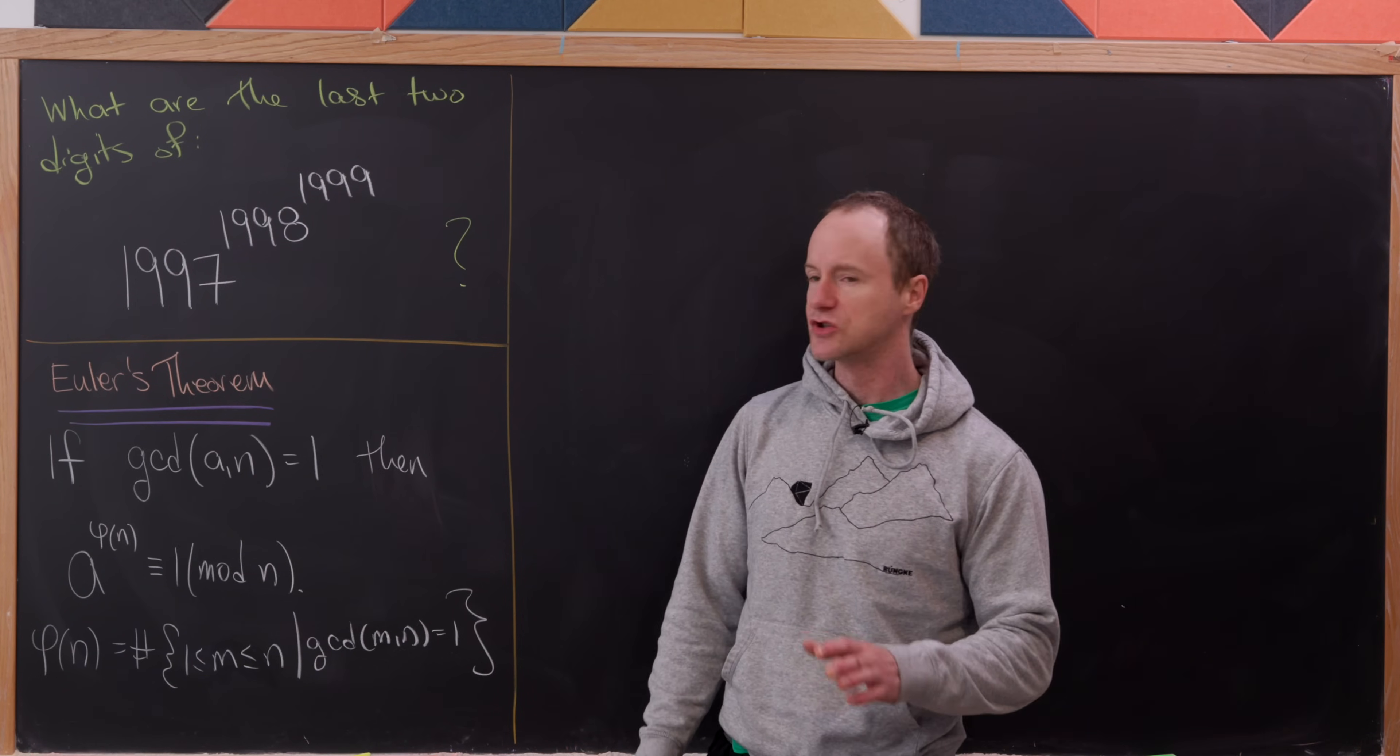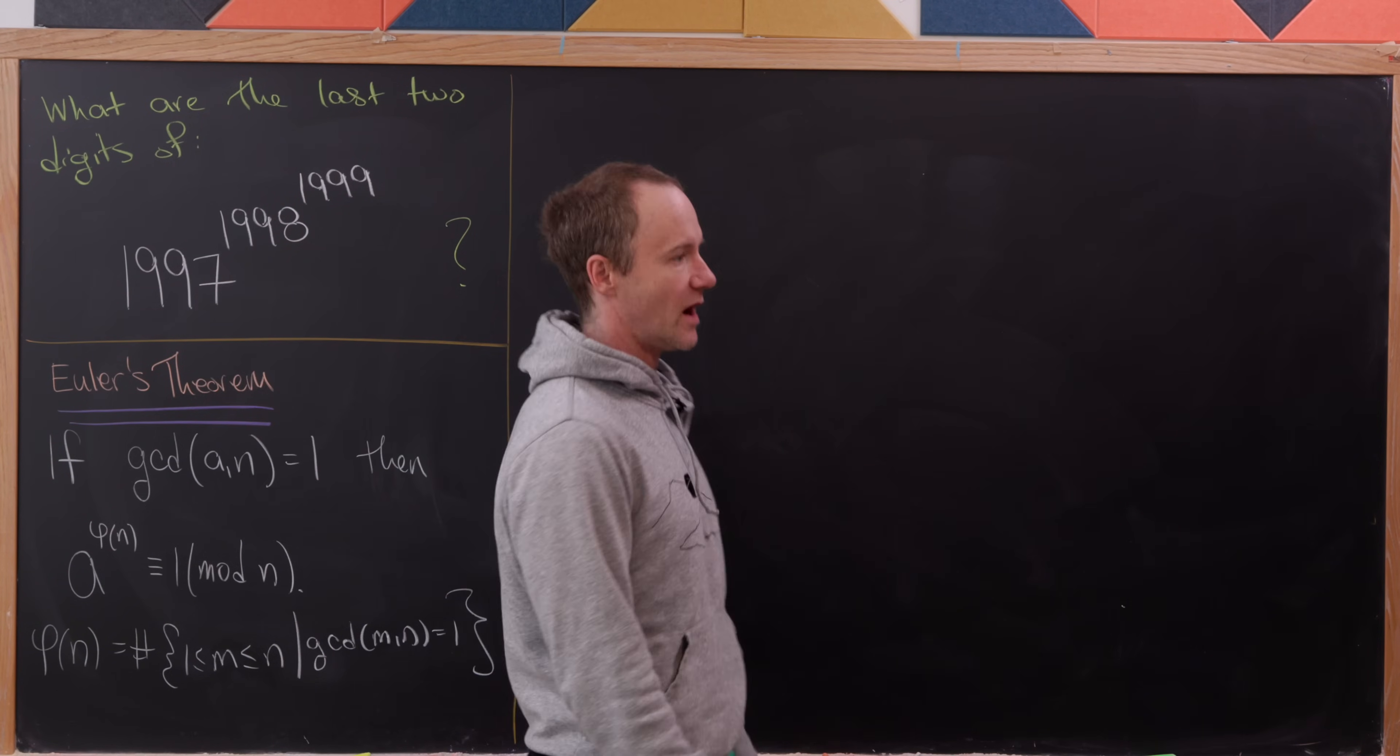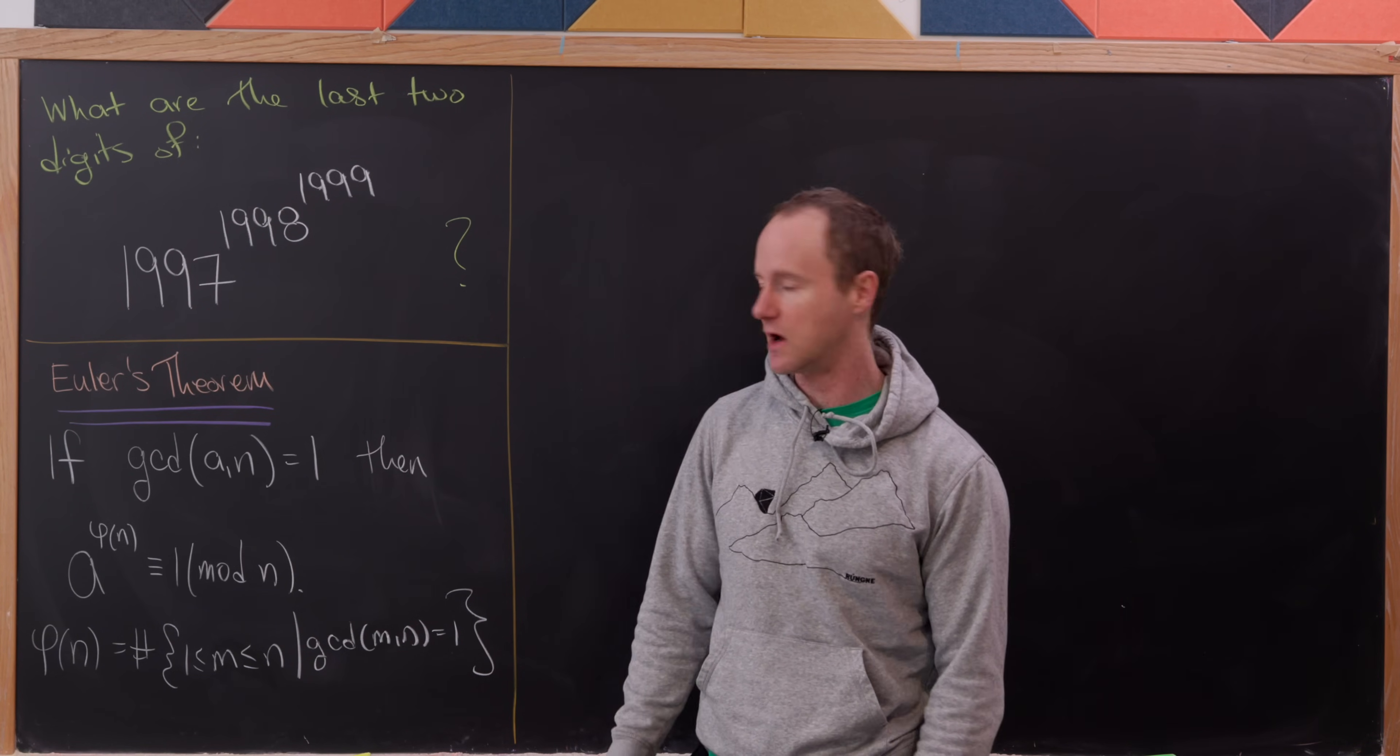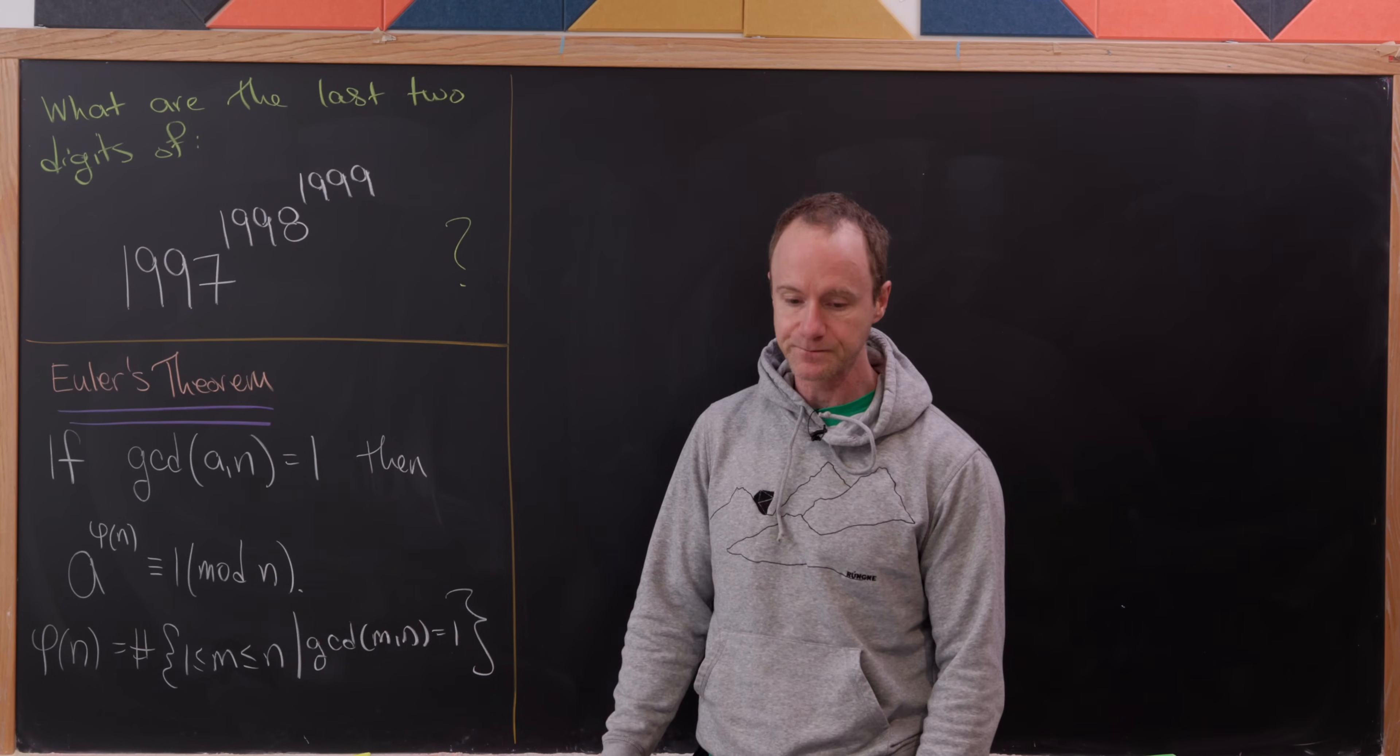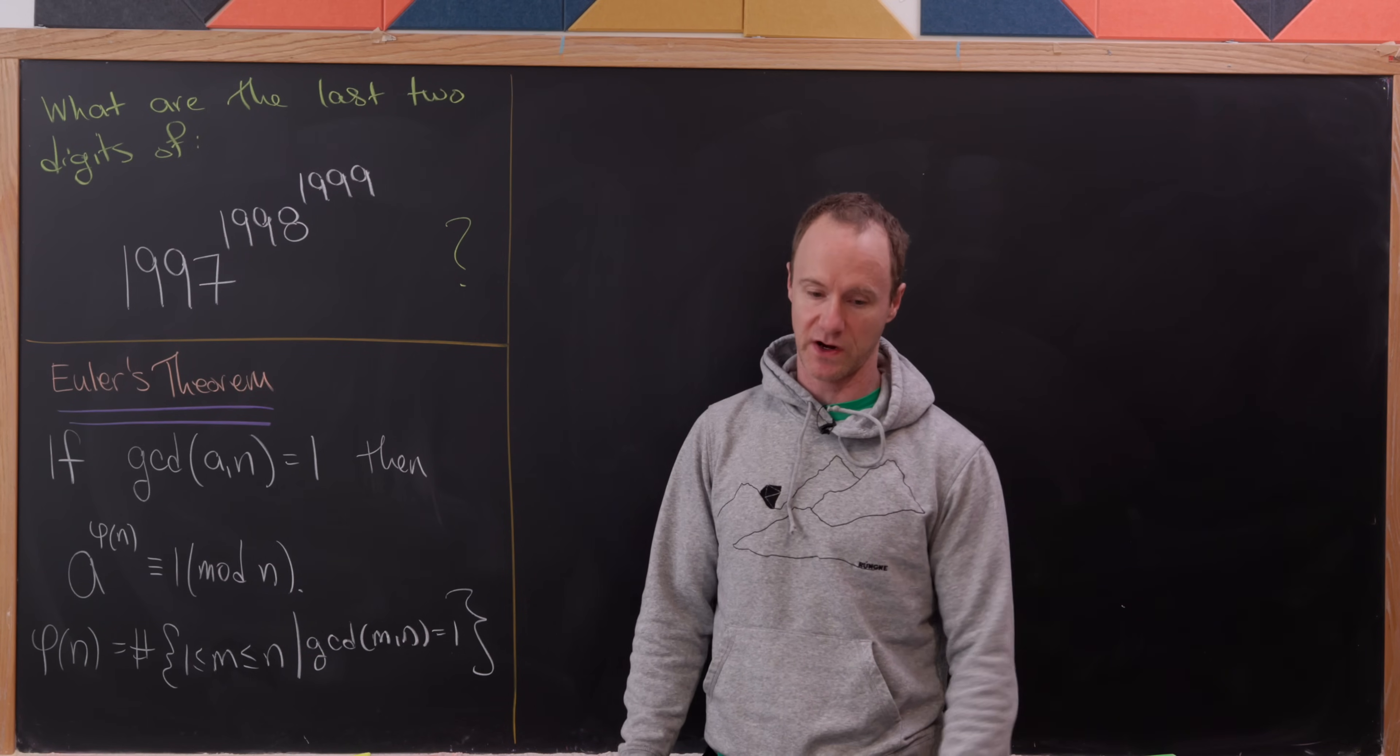What is that telling us here? We need to reduce the base mod 100. Why 100? Because we're looking for the last two digits, and that's the same thing as dividing by 100 and keeping the remainder, in other words reducing mod 100. Then we'll reduce this first exponent mod φ(100).